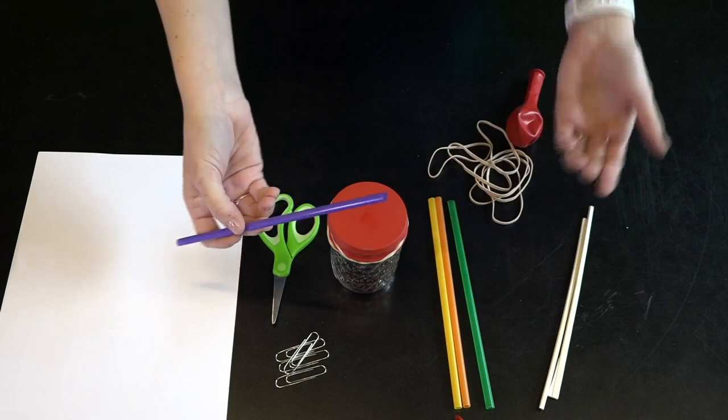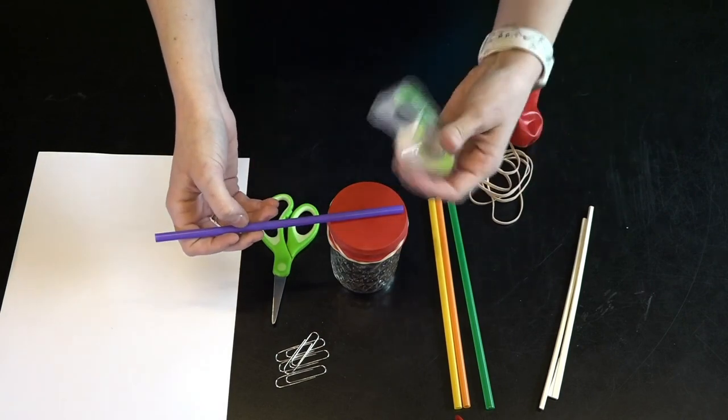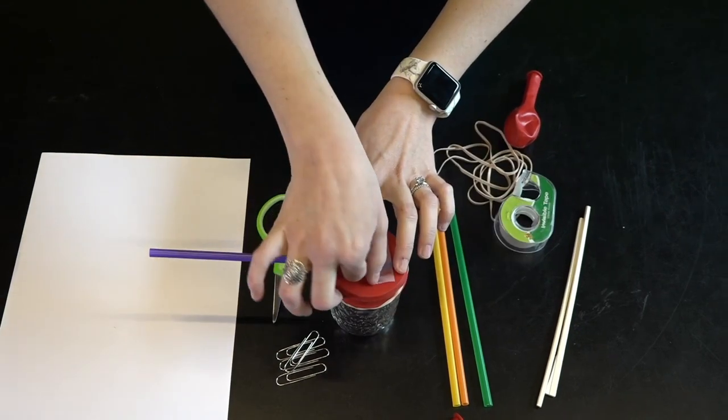Next, attach a straw to the top of the jar so that it is right across the top. Use a piece of tape to secure it into place.